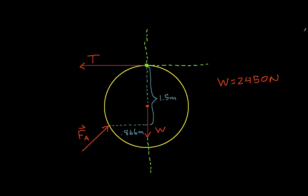What this tells us then is what the line of action for FA must be. It has to intersect this point here, and it also has to go through the point where FA is applied to the barrel, where the barrel contacts the step. So the line of action is given by this dashed green line.